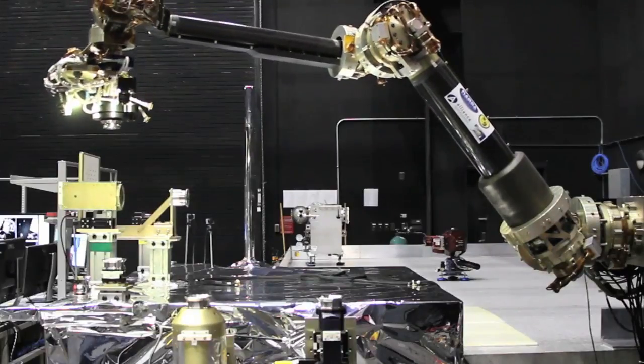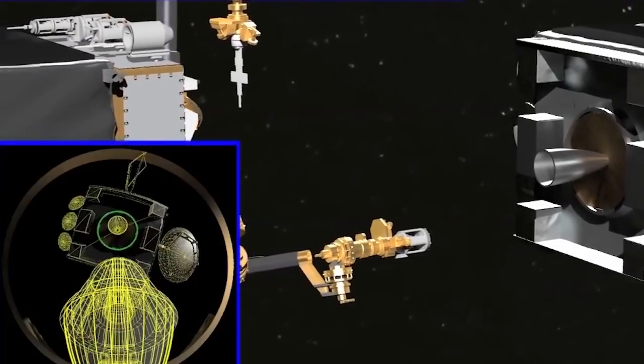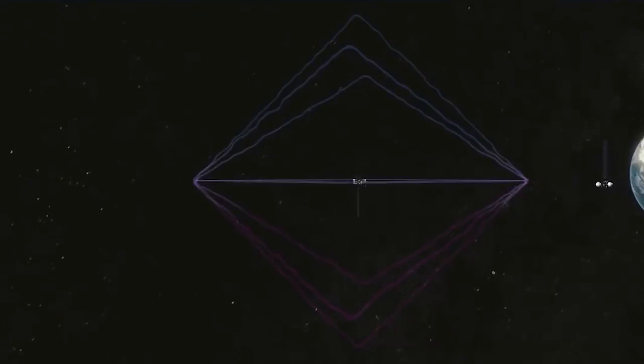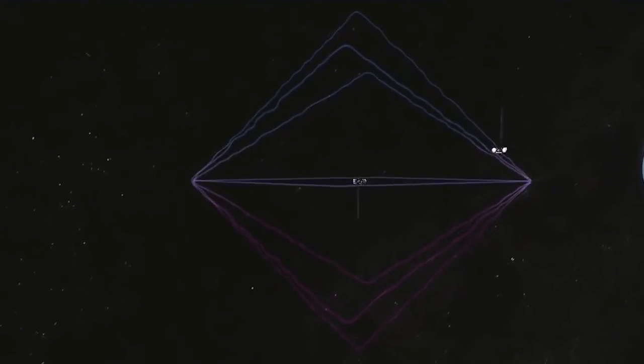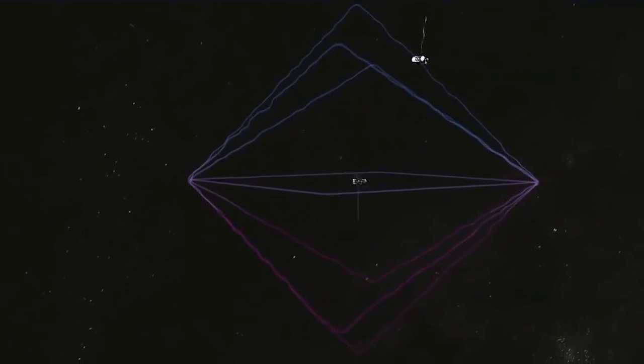The robot will have a laser-ranging system to help with long-distance targeting. In its lifetime of five to eight years, RSGS will be able to visit dozens of satellites.